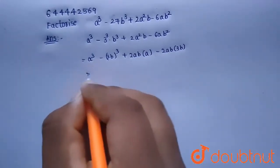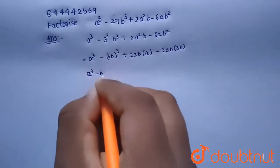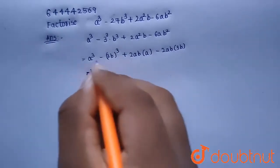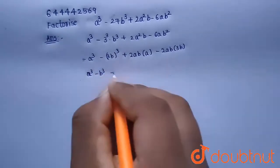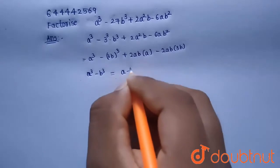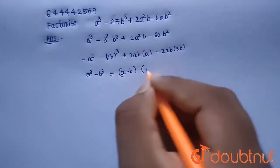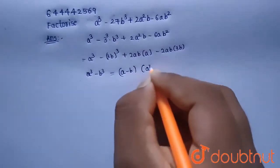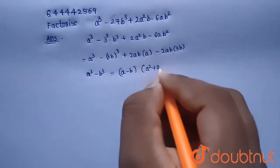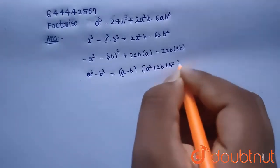Now we know that a³ minus b³ is in the form of the difference of cubes identity: a³ minus b³ equals (a minus b)(a² plus ab plus b²).